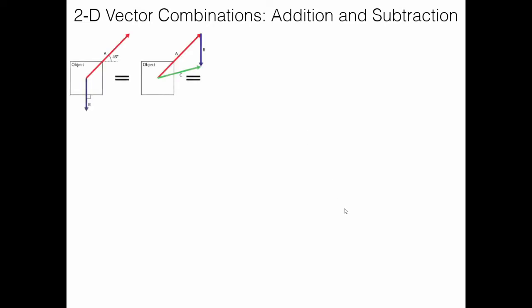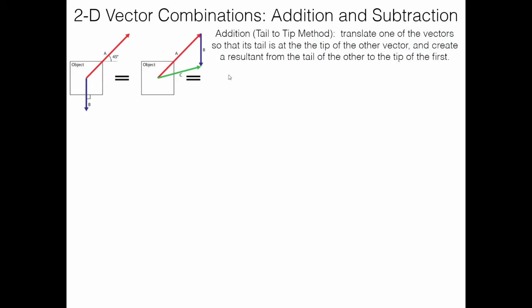Now let's go to two dimensions. To add two vectors in 2D, we can use the tail-to-tip method, which is favored by most students. Translate one vector so that its tail is at the tip of the other. Take vector B — move it so that it starts at the tip of A, translating it without changing its magnitude or direction.